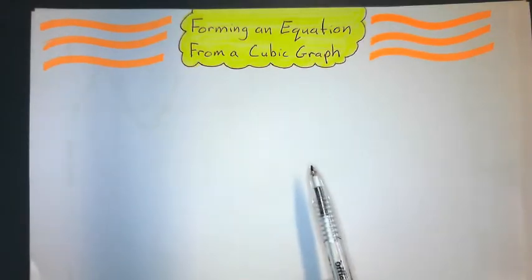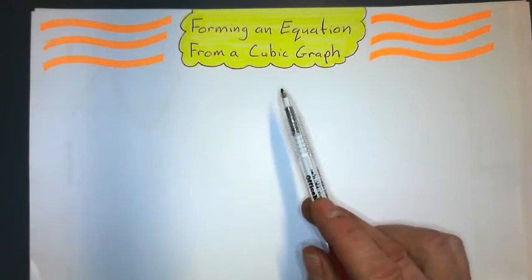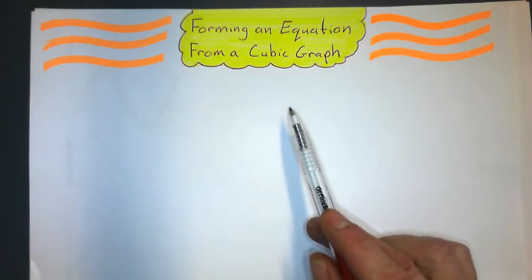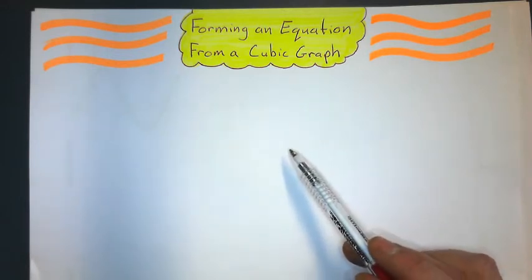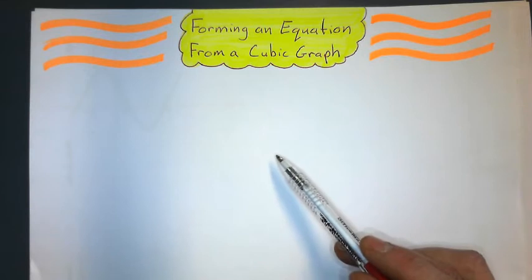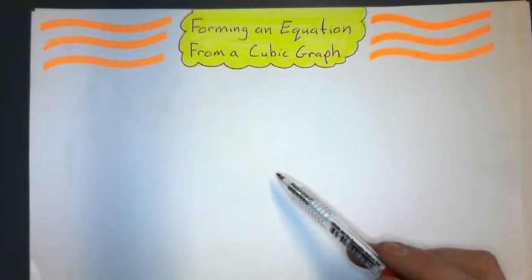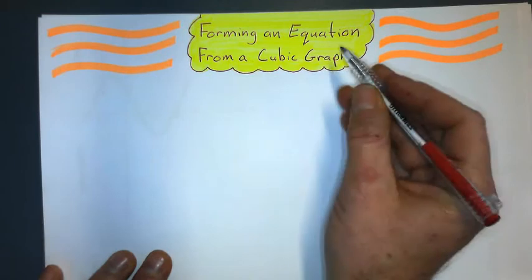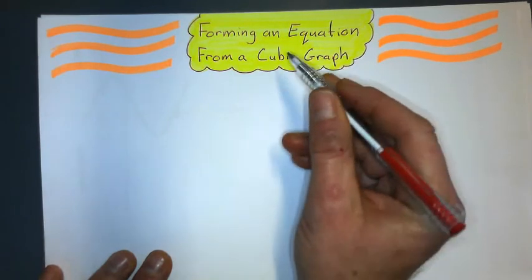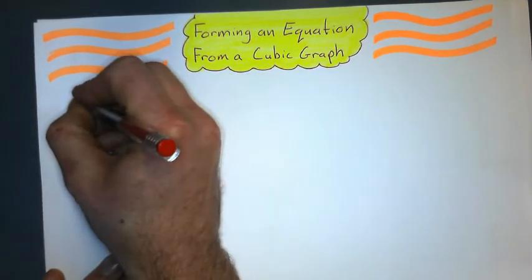I'll show you how to form an equation from a cubic graph. Our equations are going to be in factorized form. There are three forms we can have of an equation of a cubic in factorized form, and they look like this.